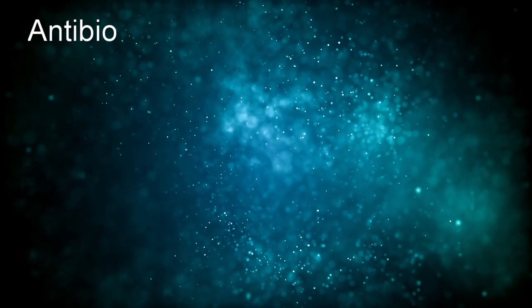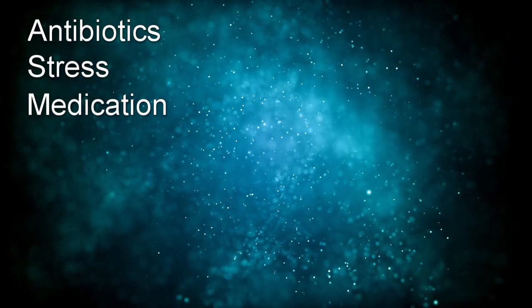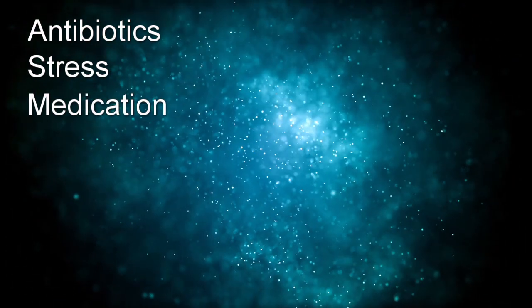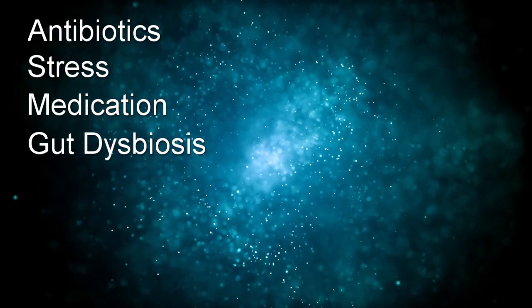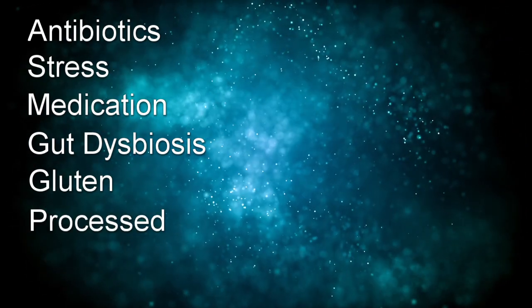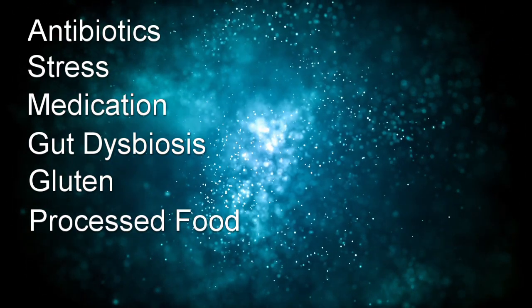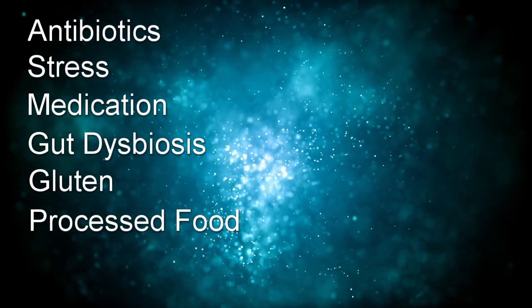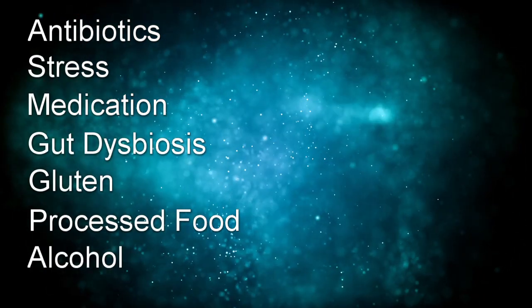Now, what actually causes leaky gut and how can we cure it? The first question is easier to answer — research has shown us a number of things that can compromise intestinal permeability. Here are the big ones: antibiotics, stress, various medications including non-steroidal anti-inflammatory drugs, and gut dysbiosis, which is a very big factor. Research has also shown that gluten can increase intestinal permeability, and processed foods with many additives or artificial sweeteners should probably be avoided — and of course, alcohol.